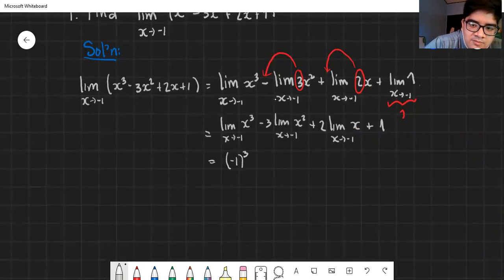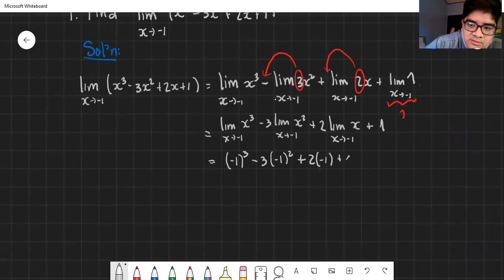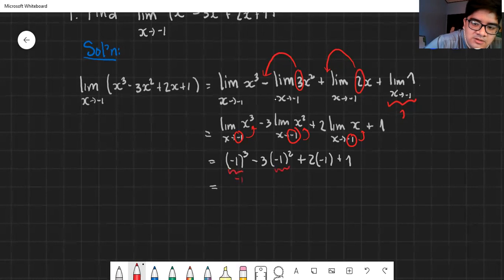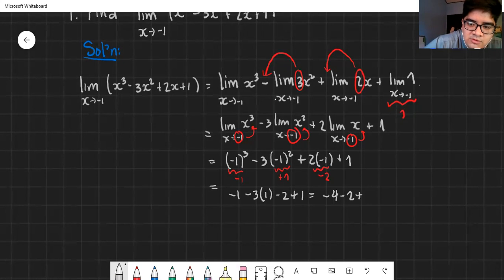Negative 1 cubed minus 3 times negative 1 squared plus 2 times negative 1 plus 1. We just substituted negative 1 into the variables. If we evaluate this, this is negative 1, this is positive 1, this is negative 2. So this becomes negative 1 minus 3 times 1 minus 2 plus 1. This is negative 4 minus 2 plus 1 which is negative 6 plus 1 or negative 5. The answer to the first example is negative 5.